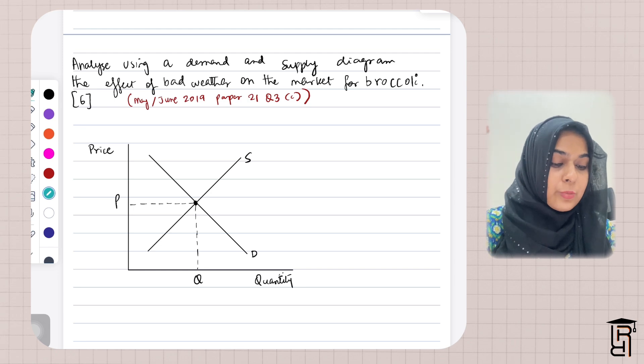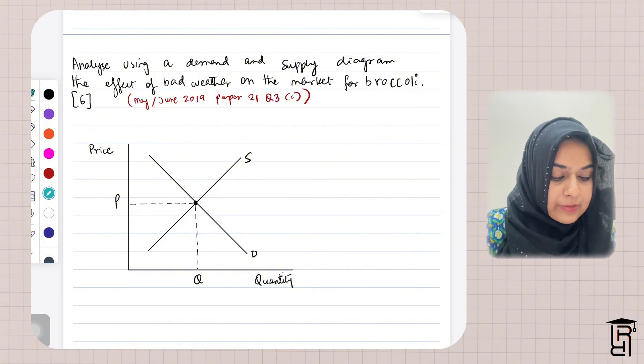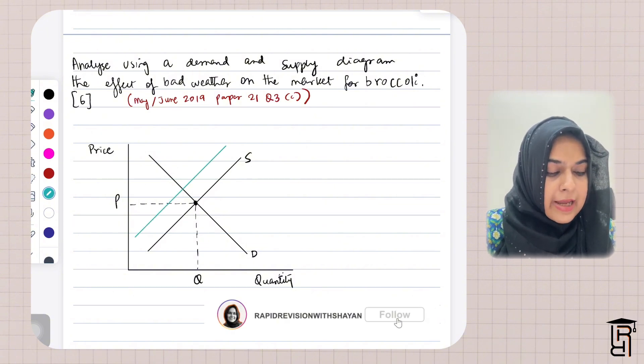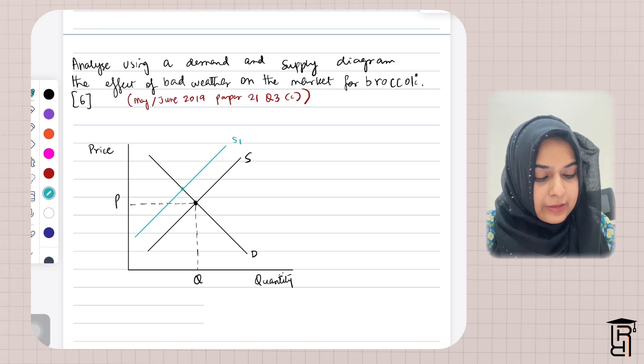So what will happen here is that the supply curve for broccoli will shift towards the left. We'll make the new supply curve here. This will be S1 and the equilibrium will be this equilibrium.